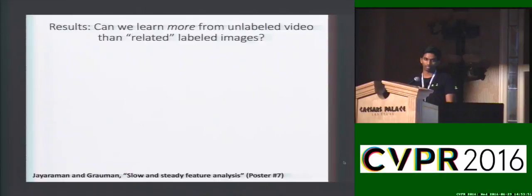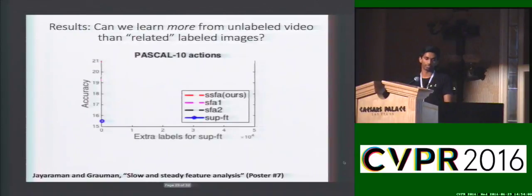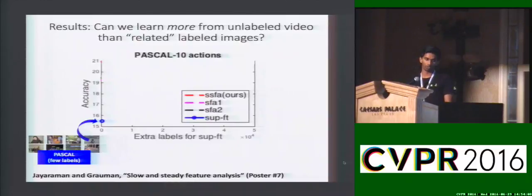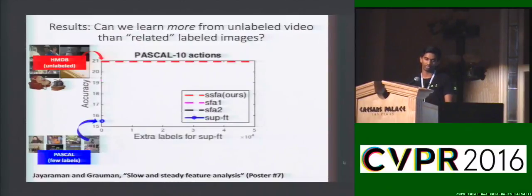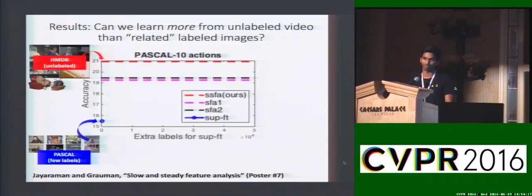In one particular experiment, we asked the question: can we actually learn more from watching just unlabeled video than we can by learning from related labeled images? On the Pascal VOC 10 action detection task, if you learn only with the Pascal 10 labeled images, you get about 15.5%. If you pre-train representations using our steady feature analysis, you get to about 21%. If you learn only slow representations, you get only to about 19.5%.